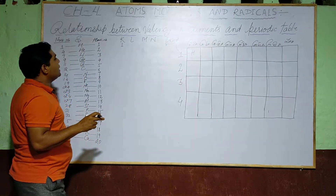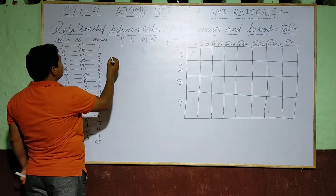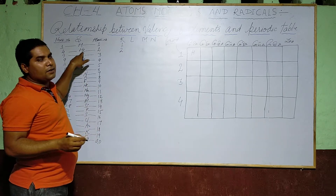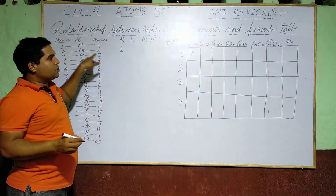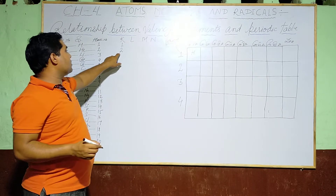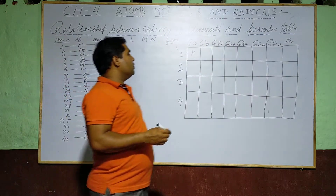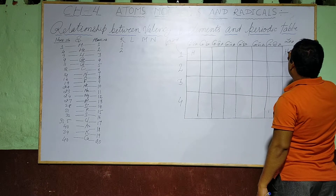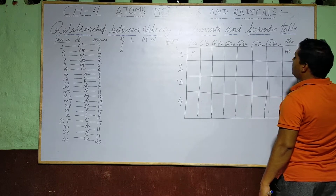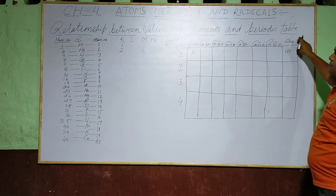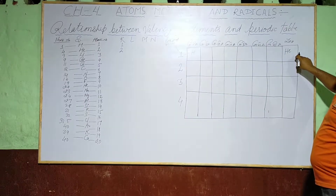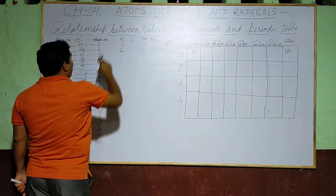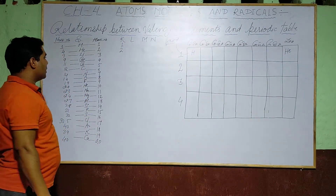Helium has atomic number 2, so its configuration is K²=2. It is an inert gas — stable in nature — with zero valency. It requires only one shell, so Helium is placed in Period 1 in the zero-valency group.